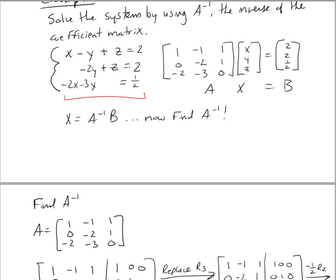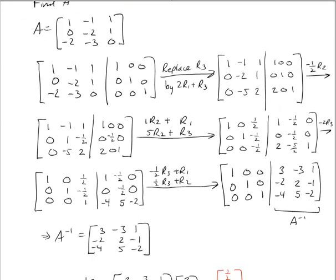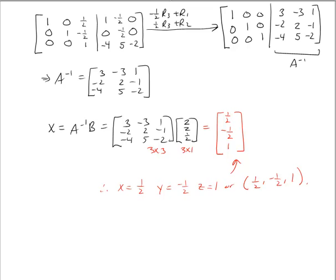We now have several ways to solve systems of equations: augmented matrix with Gaussian elimination, Gauss-Jordan elimination, solving algebraically, and using the inverse notation X = A⁻¹B — provided the inverse exists. This wraps up the lecture on multiplicative inverses of matrices and matrix equations. Hopefully, we'll have time in class to work on applications involving coding matrices.